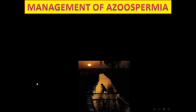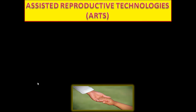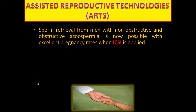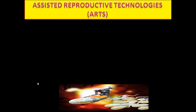Management of azoospermia. To understand management it is important to understand assisted reproductive technologies. Sperm retrieval from men with both non-obstructive and obstructive azoospermia is now possible with excellent pregnancy rates when ICSI is applied. The ability to use cryopreserved epididymal and testicular spermatozoa will continue to limit the number of sperm retrieval procedures necessary to achieve fertility.